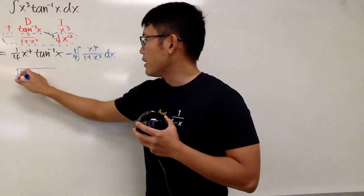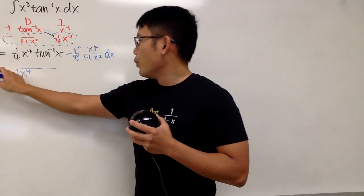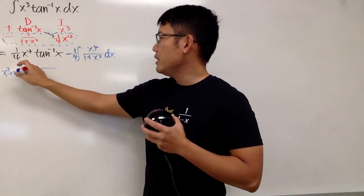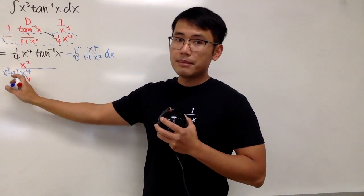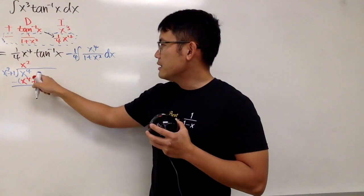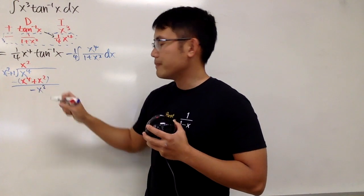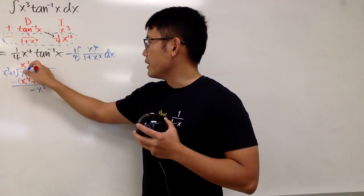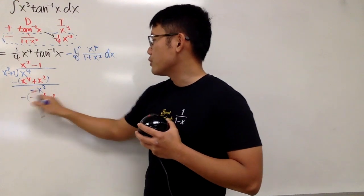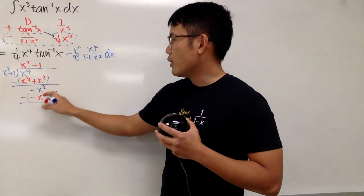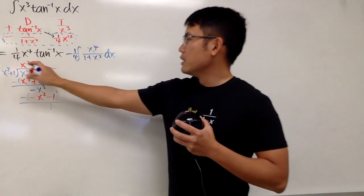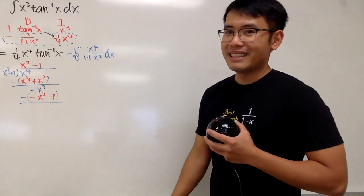So I'll do the long division right here. I'll put x to the fourth power inside and x squared plus 1 outside. We need x squared — x squared times x squared plus 1 gives x to the fourth power plus x squared. We subtract, giving negative x squared. We can go again with negative 1: negative 1 times x squared plus 1 gives negative x squared minus 1. When we subtract, we get remainder positive 1.